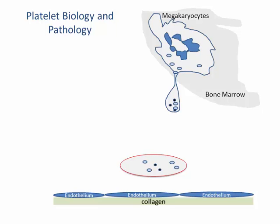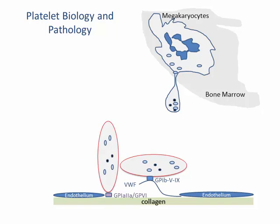Platelets are essential for primary hemostasis. They are first released from bone marrow megakaryocytes into circulation. At the damaged vascular site, platelets can bind to exposed sub-endothelial collagen via glycoprotein 1b–von Willebrand factor binding and platelet collagen receptors glycoprotein 1a-2a and GP6. Platelets are subsequently activated through signal transduction and granule contents are released. The release of ADP, thromboxane A2, and other molecules further activates platelets and causes conformational change of glycoprotein 2b-3a, which then binds to fibrinogen and forms platelet aggregates.